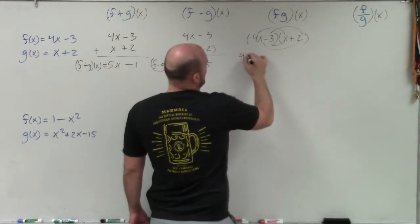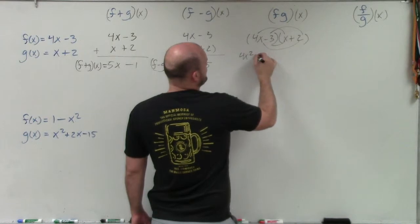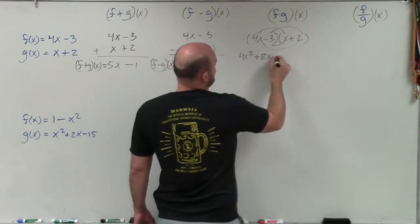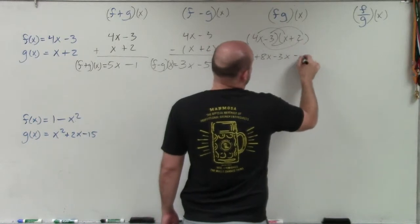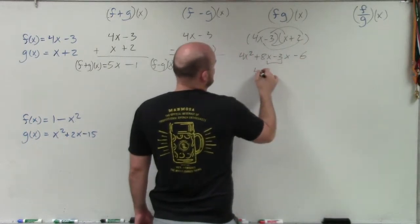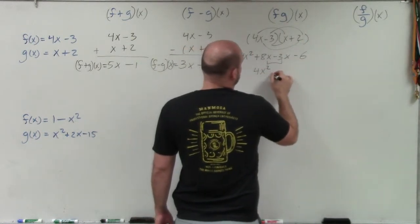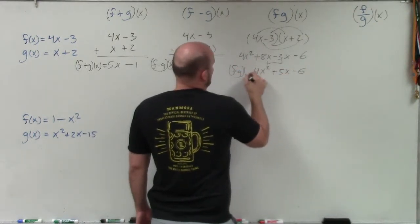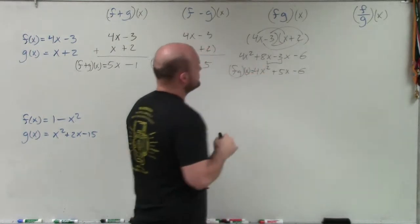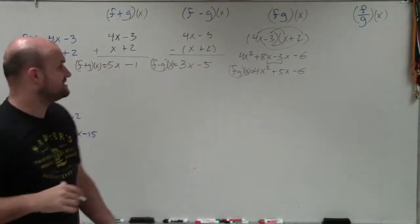And 4x times x is 4x squared. 4x times 2 is going to be a positive 8x. Negative 3 times x is negative 3x. Negative 3 times 2 is negative 6. Combine my two middle terms. I have 4x squared plus 5x minus 6. So therefore, f times g of x equals 4x squared plus 5x minus 6.